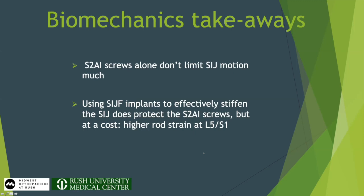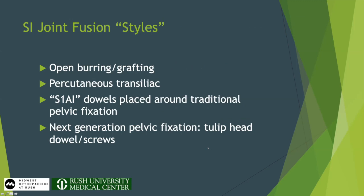Using SI joint implants to really stiffen up the SI joint and remove motion probably protects the S2AI screws, but gets us thinking: if we see higher rod strain at L5-S1, what about the other adjacent segments? Ways to possibly fuse the SI joint include burring out the joint because you're already open, using percutaneous transiliac fixation devices, using S1-alar screws placed just above the S2AI, or combination implants — fusion screws that core out bone with a tulip head so they act like a screw.